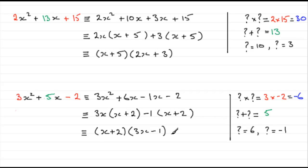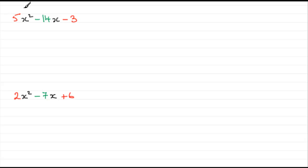I've got two more examples for you: one with two minuses and one with a minus and a plus. So you might like to try these. We've got five x squared minus fourteen x minus three, and two x squared minus seven x plus six. Give them a go.